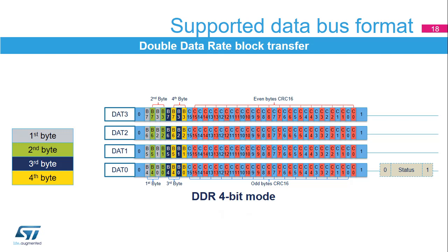In double data rate (DDR) mode, depending on the configured data bus width, the data path sends data blocks over 4 pins (SDMMC D0 to SDMMC D3) or 8 pins (SDMMC D0 to SDMMC D7). First, a full-cycle start bit is generated on the bus, followed by the data packet with the first-to-last bytes of the sequence, with odd byte data on the falling edge of the clock and even byte data on the rising edge. Then the odd and even CRC-16 checksums and full-cycle end bit are appended to the data packet on the bus lines. In a 4-bit data width configuration, each line has its own start bit, end bit, and odd and even CRC-16 checksums.